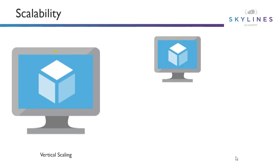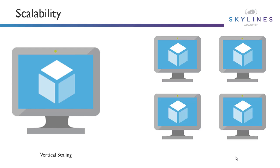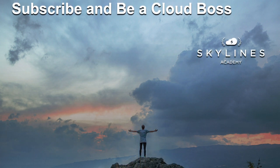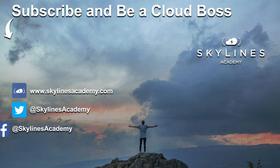Horizontal scaling is about adding more nodes, essentially scaling them out up to the maximum or whatever you want to support based on performance requirements. So know the difference between vertical scaling and horizontal scaling.